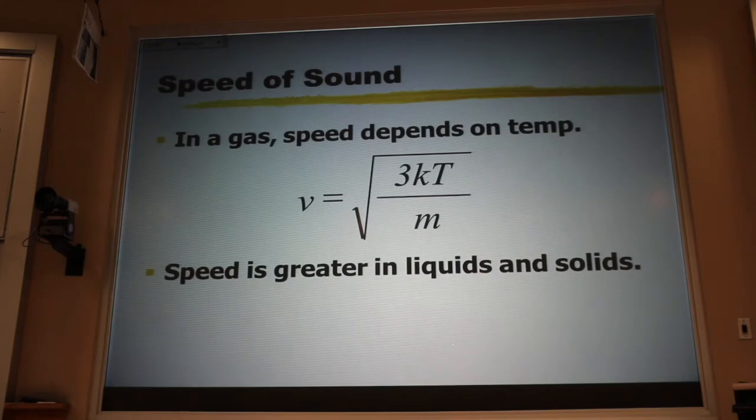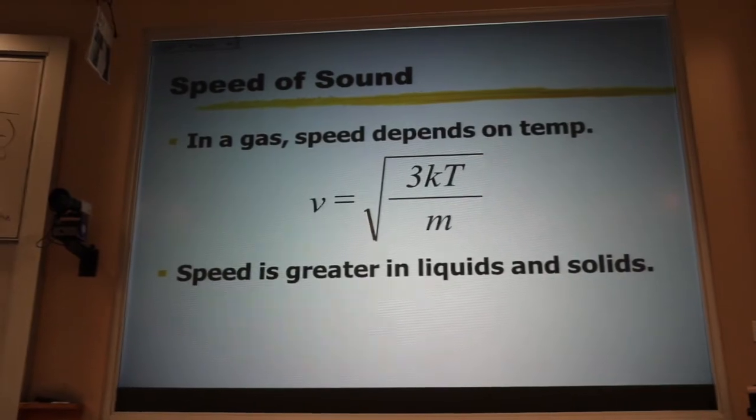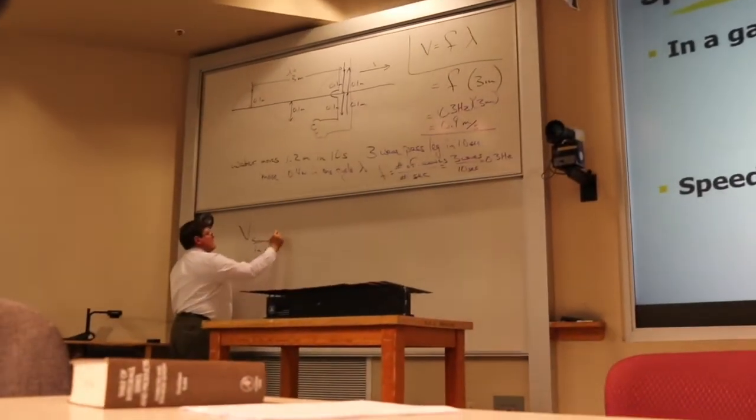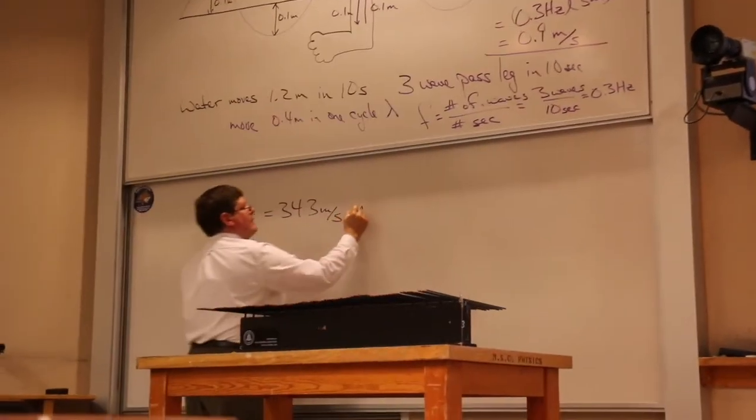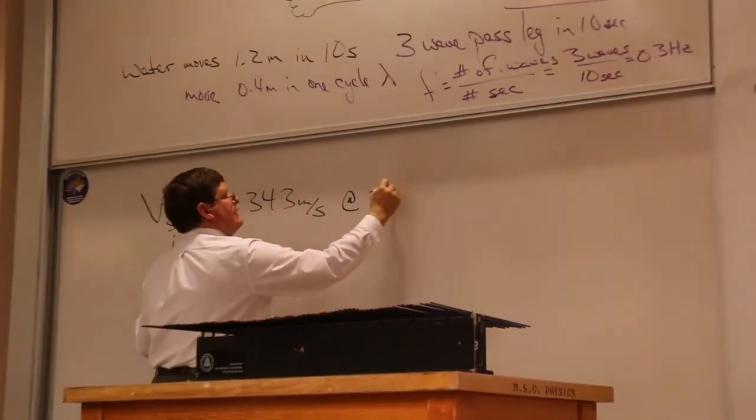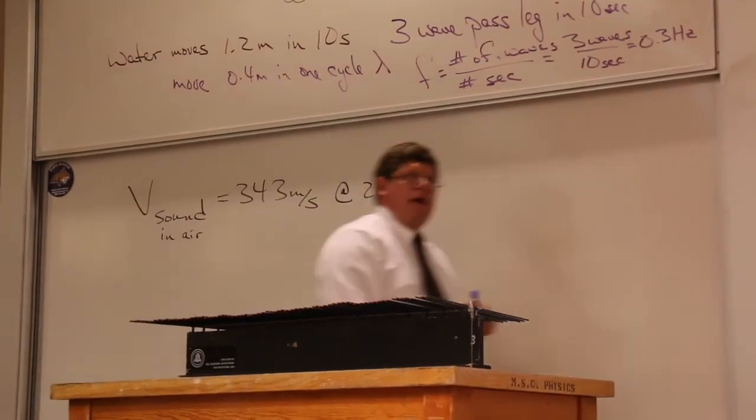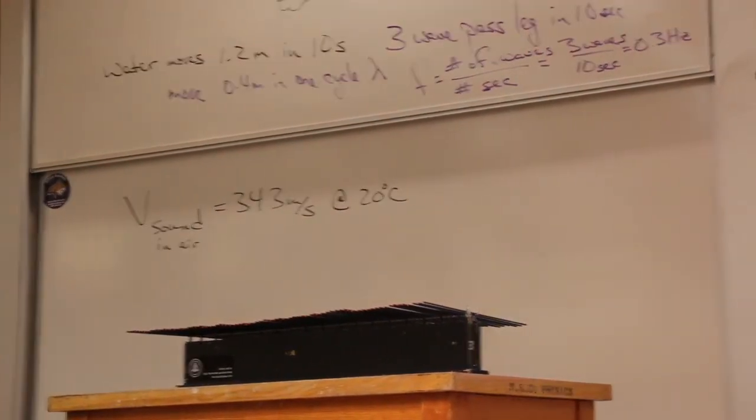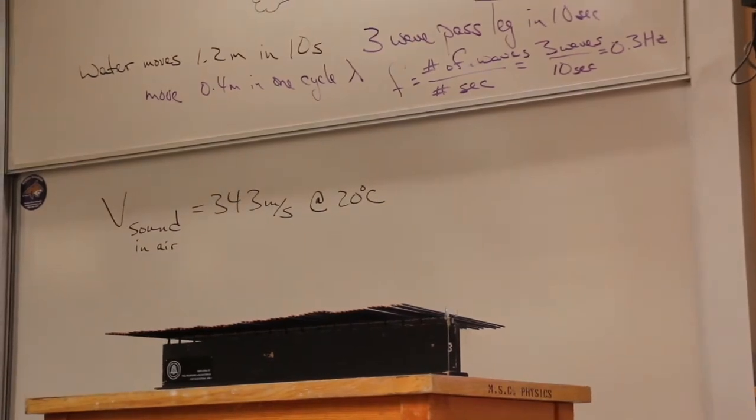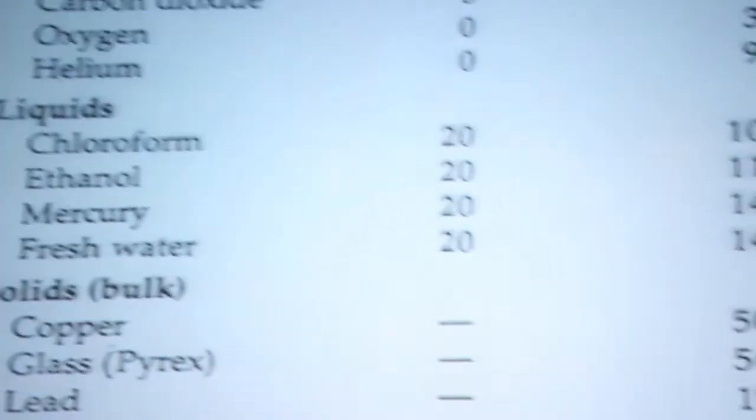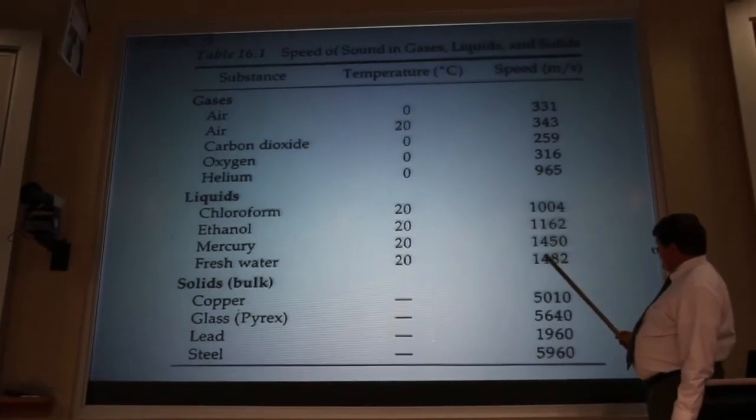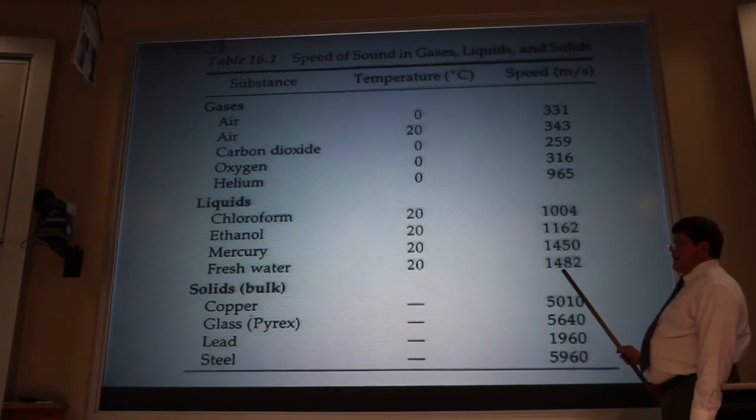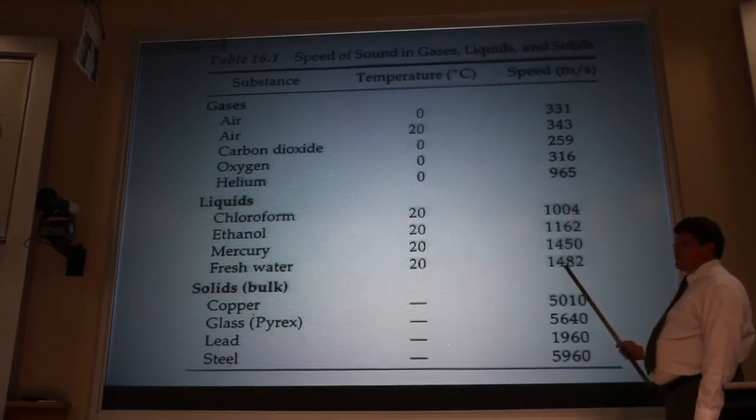What we will use is that the speed of sound in air is 343 meters per second at 20 degrees C, at room temperature. If we look at this table, we can see the speed of sound in air at room temperature. Here's the speed of sound in water at room temperature, and you can see that it's roughly four times faster.